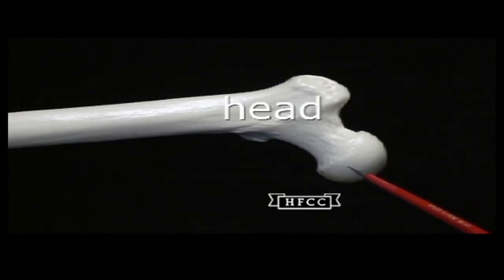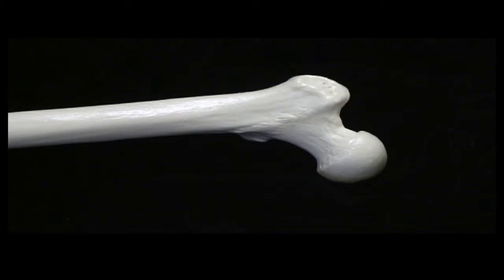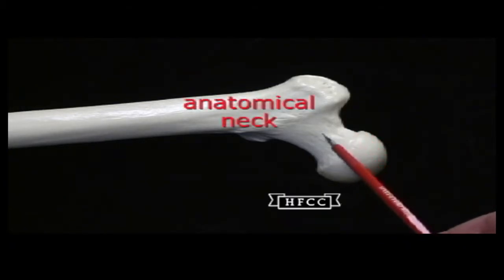It fits into or articulates with the acetabulum of the os coxae or hip bone. Next will be this constricted area encircled in yellow, the anatomical neck.